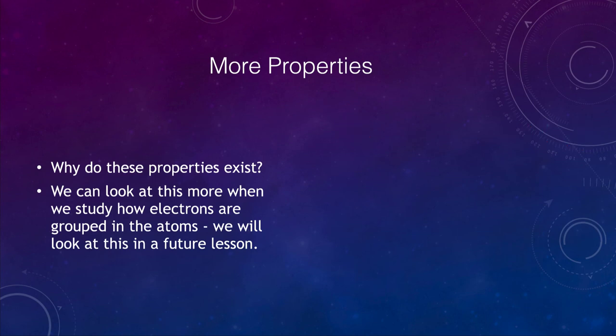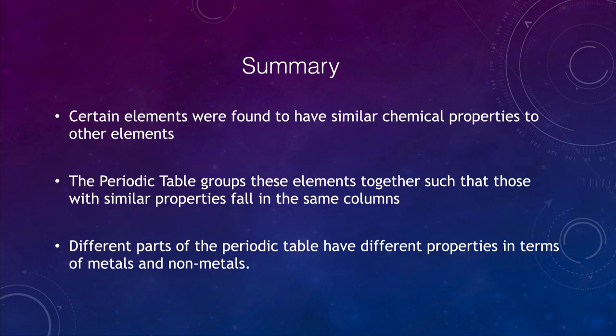Let's finish up here with our summary. In early times, elements were found to have similar chemical properties. Not all chemical elements had different properties. There were some that were very similar, and we were able to group these using the periodic table to put these elements together so that the same ones with similar properties fall in the same columns. Each column tells us what kind of properties it's going to have.